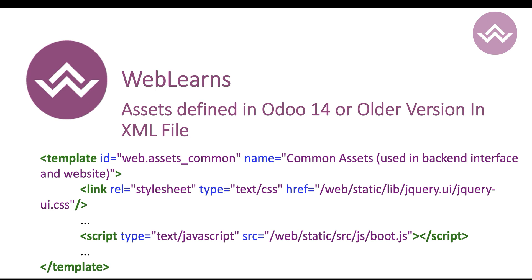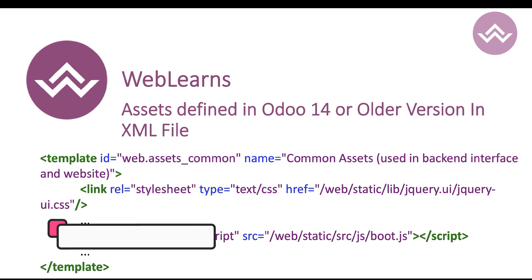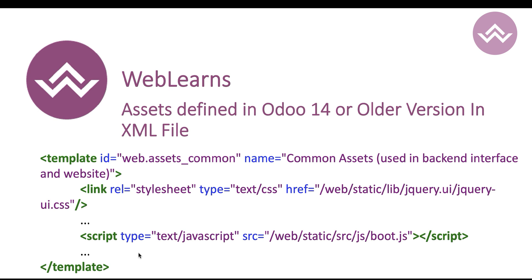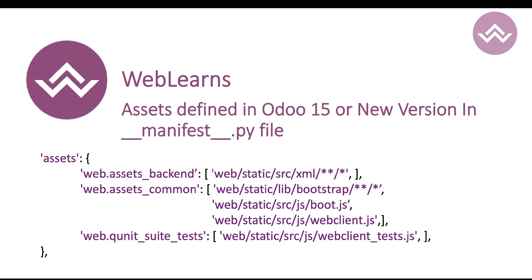This is a very interesting part especially when migrating from an older version to a newer version, particularly for the JavaScript framework. In Odoo 14 or older versions, you define JS, SCSS, or CSS files on the XML side. Inside the XML template you use different asset keys such as assets_common and assets_frontend, and inside each you define the different file paths.